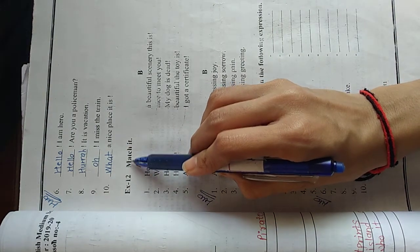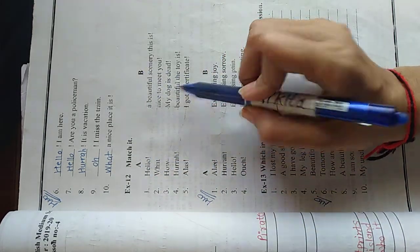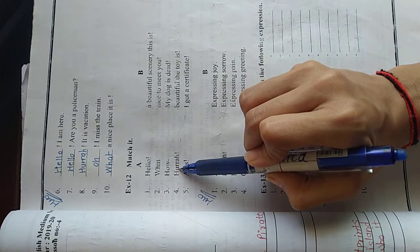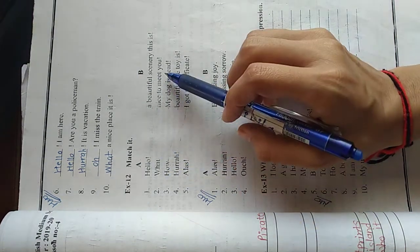Now look at here. Match it. Here part A is given and here part B is given. Here in A part interjections are given and here sentences are given. First of all we will read the question.